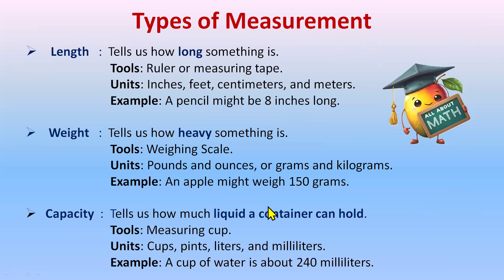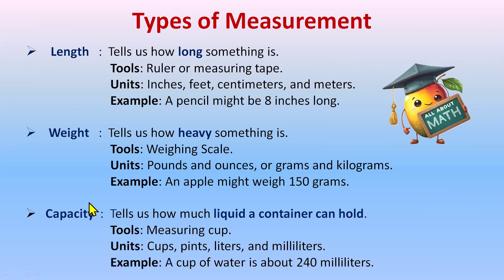For example, a cup is about 210 milliliters. So we have three types: length, weight, and capacity. Length tells us how long something is, weight tells us how heavy something is, and capacity tells us how much liquid a container can hold.